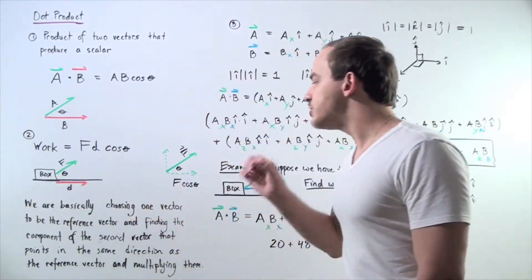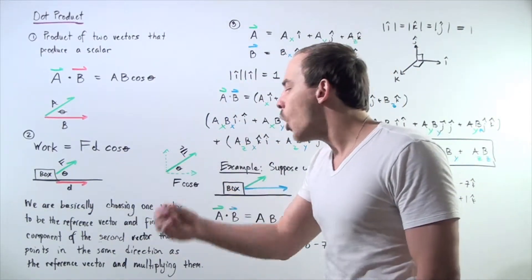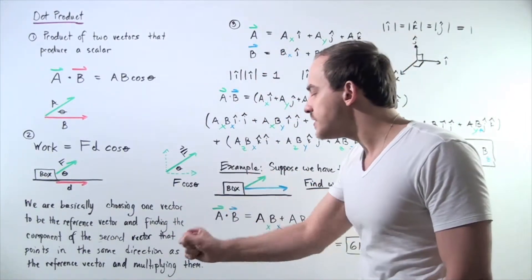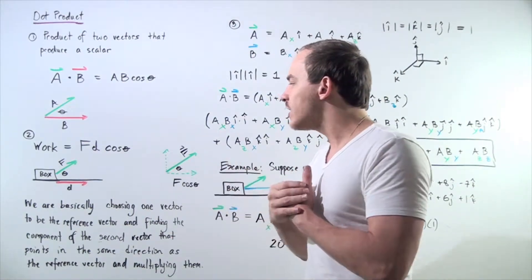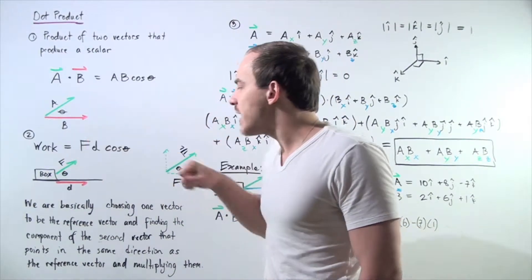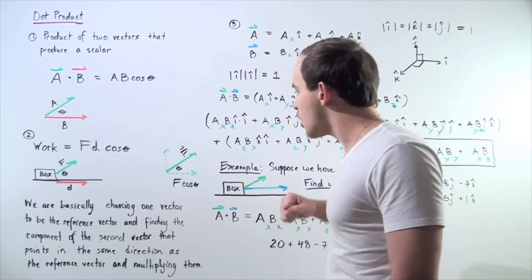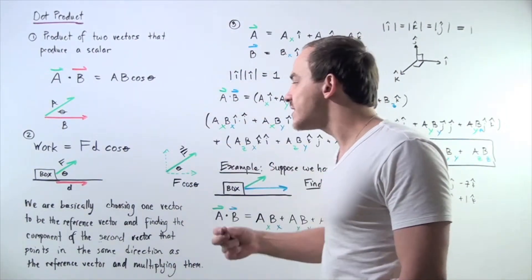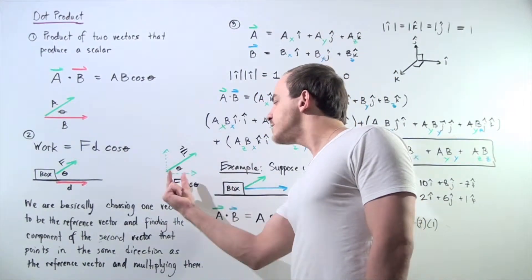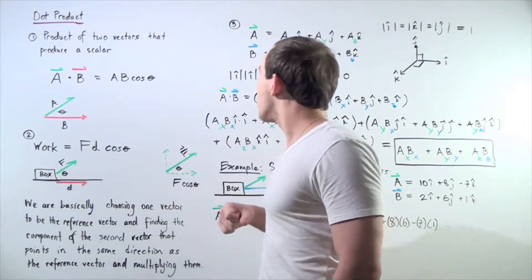We are basically choosing one vector to be the reference vector, finding the component of the second vector that points in the same direction as the reference vector, and multiplying these two values. In this case, we want to find the component of the force vector that points along the x-axis in the same direction as the displacement. So we use our cosine trigonometric function, and we find that this side is force times cosine theta, which is exactly what we have for the work formula.